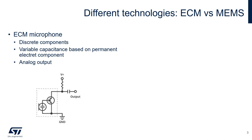ECM microphones are composed of discrete components, and they usually include a variable capacitance, usually based on a permanent electrode, and a transistor used to amplify and buffer the variations in capacitor voltage. ECM microphones output an analog signal, which must be further processed and filtered to be used.